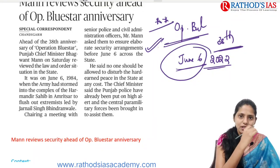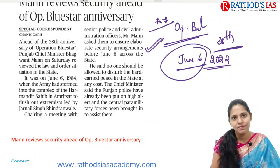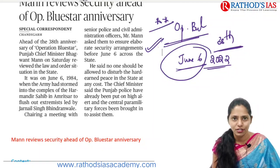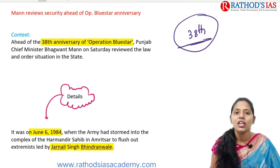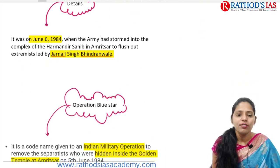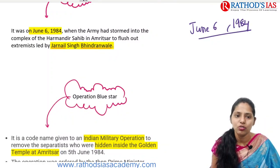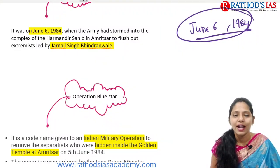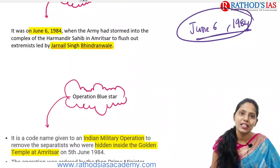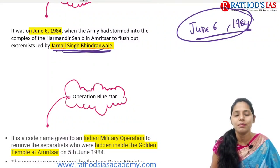This topic is important from your post-independent India point of view and even from a defense point of view. The context says that ahead of the 38th anniversary of Operation Blue Star, Punjab's Chief Minister mainly reviewed the law and order situation in the state. On June 6, 1984, our army had stormed into the Golden Temple complex of Harmandir Sahib in Amritsar to flush out extremists led by Jarnail Singh Bindranwale.